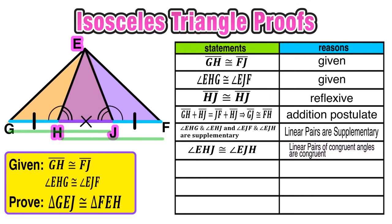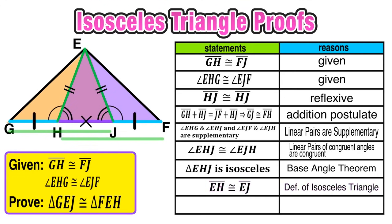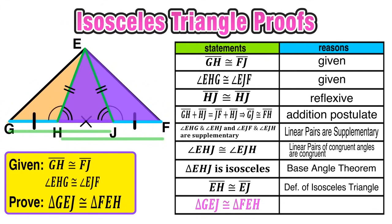Now we should notice that triangle EHJ is isosceles, and the reason for saying that is because of the base angle theorem — the two base angles are congruent. And because triangle EHJ is isosceles, we know that the sides opposite those congruent angles are also congruent, so we can conclude that side EH is congruent to side EJ by the definition of an isosceles triangle. So now we're finally ready to prove that triangle GEJ and triangle FEH are congruent. We have a side, angle, side in each triangle with the angle between the two congruent sides, so we can finish this proof using the side-angle-side theorem.